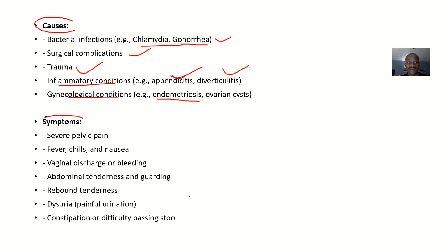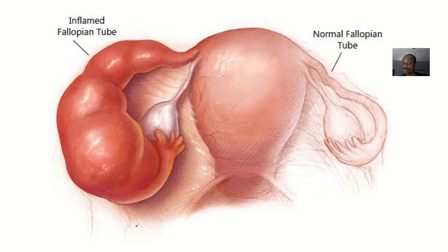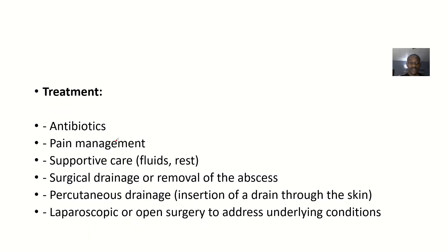If there is abscess in the pelvis, the patient will complain of severe pelvic pain, fever, chills, and nausea. There may be vaginal discharge or bleeding. There will be abdominal tenderness or muscle guarding, meaning the patient will not want the area touched. There will also be rebound tenderness — where the pain intensifies when pressure is released rather than applied. Additional symptoms include dysuria, which is painful urination, and constipation or difficulty passing stool.